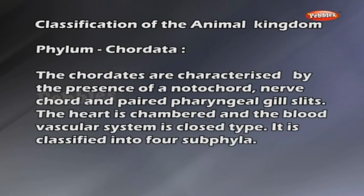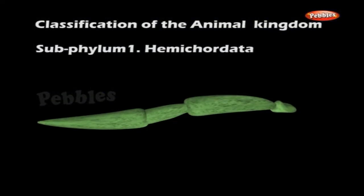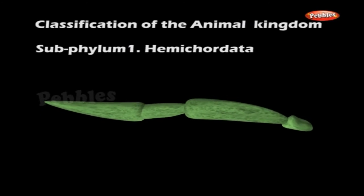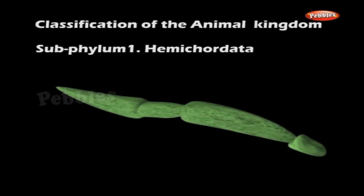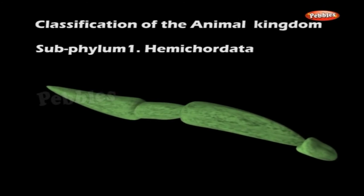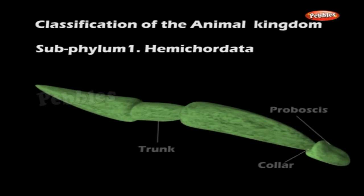Phylum Chordata. The chordates are characterized by the presence of a notochord, nerve cord and paired pharyngeal gill slits. The heart is chambered and the blood vascular system is closed type. It is classified into four subphyla. Subphylum 1: Hemichordata. Balanoglossus is an example of Hemichordata. They are marine organisms. The body is soft, vermiform, unsegmented, bilaterally symmetrical and triploblastic. The body is divisible into three distinct parts: proboscis, collar and trunk. A notochord-like structure is seen projecting from the pharynx into the proboscis.